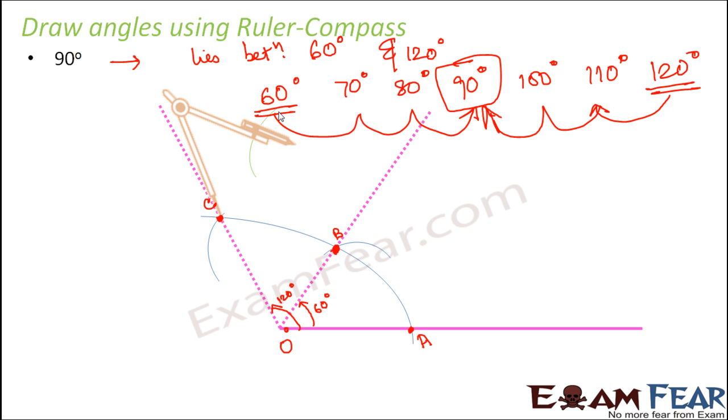Similarly, taking C as the center and radius slightly more than half of BC, we draw another arc. Now we see that these two arcs intersect at a point. So let's call this point as E. So now we join point E to point O.